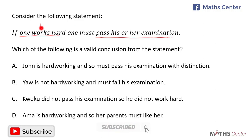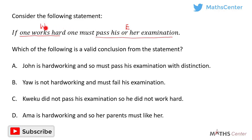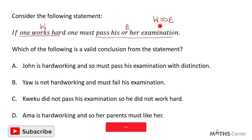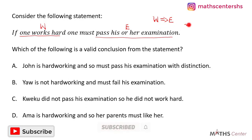Let's use W to represent those who work hard and E to represent those who pass their examination. The statement is: if one works hard, one must pass his or her examination. This means that if someone belongs to W, it implies that the person also belongs to E. So if someone works hard it implies that the person will pass his or her examination. We can say that W implies E. If W implies E, then the valid conclusion we can draw is that the negative of E implies the negative of W.